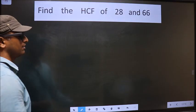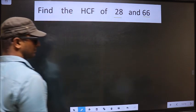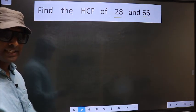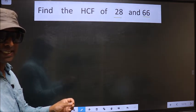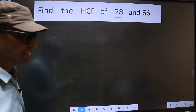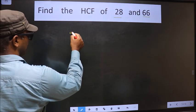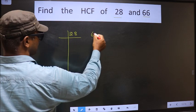Find the HCF of 28 and 66. To find the HCF, first we should do the prime factorization of each number separately. That is, 28 and 66.